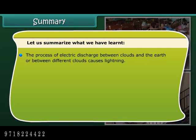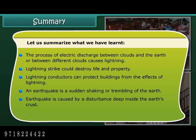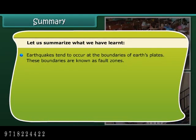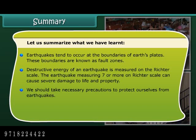The process of electric discharge between clouds and the earth, or between different clouds, causes lightning. Lightning strike could destroy life and property. Lightning conductors can protect buildings from the effects of lightning. An earthquake is a sudden shaking or trembling of the earth, caused by a disturbance deep inside the earth's crust. It is not possible to predict the occurrence of an earthquake. Earthquakes tend to occur at the boundaries of earth's plates, known as fault zones. The destructive energy of an earthquake is measured on the Richter scale; an earthquake measuring 7 or more can cause severe damage to life and property.